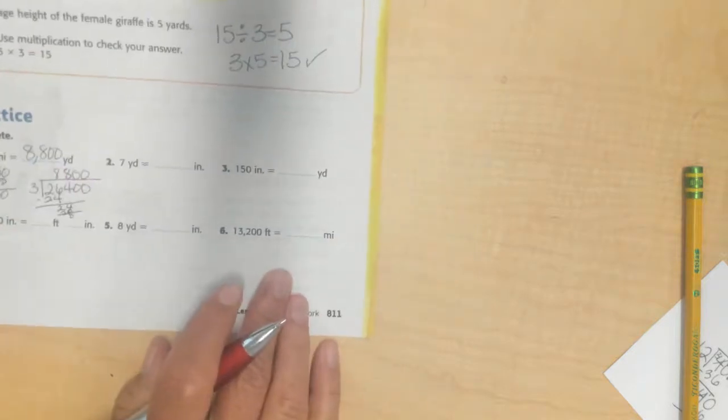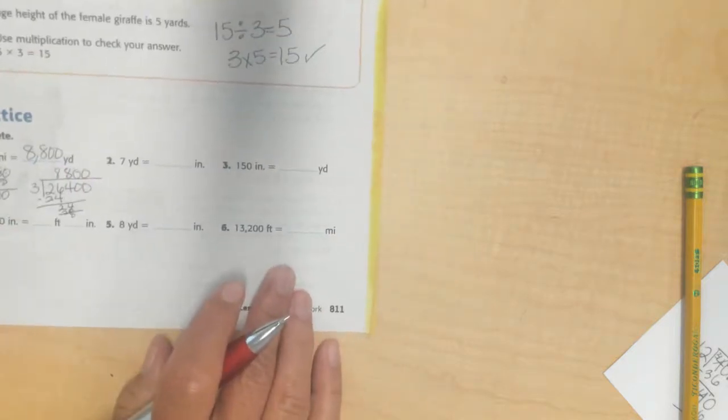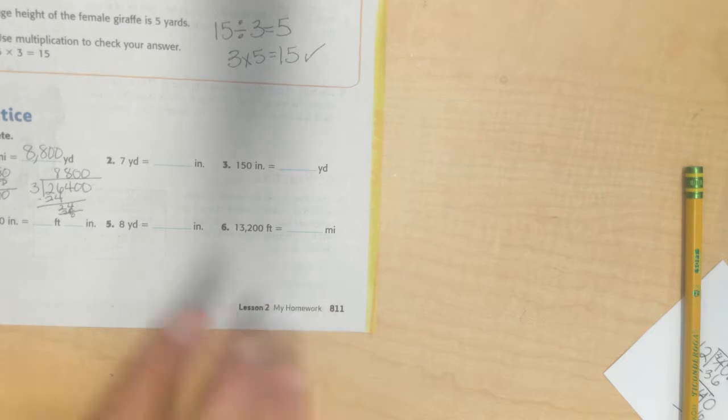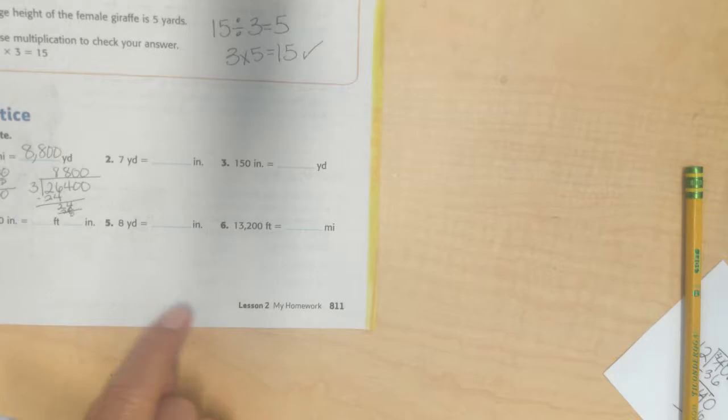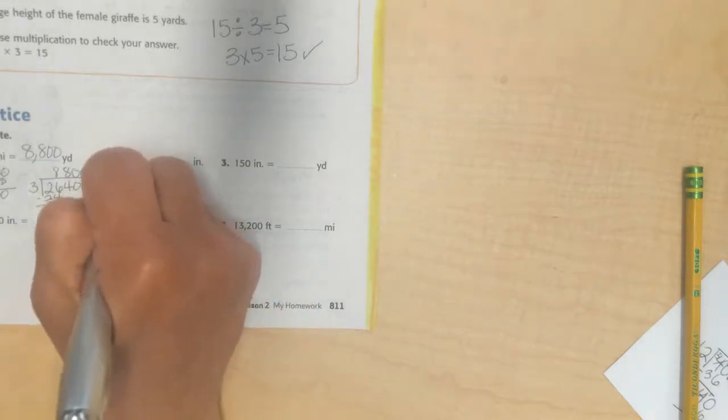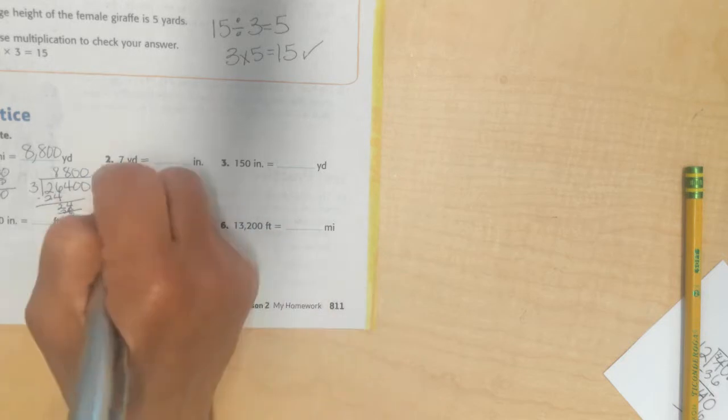Now I have 7 yards, and I want to figure out how many inches. I could do this a couple different ways if I don't remember how many inches there are in a yard. There's 36, because there's 12 plus 12 plus 12. Because there's 3 feet in a yard, and there's 12 inches in a foot.